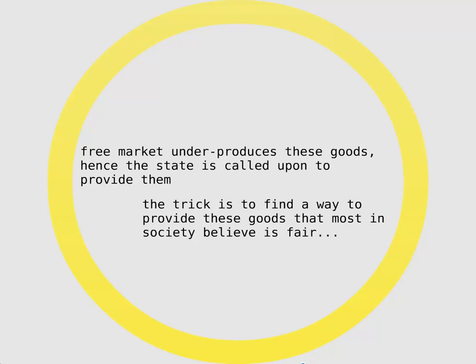We see this again and again in surveys conducted in the United States and around the world. In the United States, people overwhelmingly want lower taxes and lower spending. But as soon as you ask them if that money should come from cuts to defense, education, infrastructure, or social security, people will almost never say that they're willing to cut any single program. So there's a real problem facing societies to provide public goods effectively and in a way that people feel is fair.